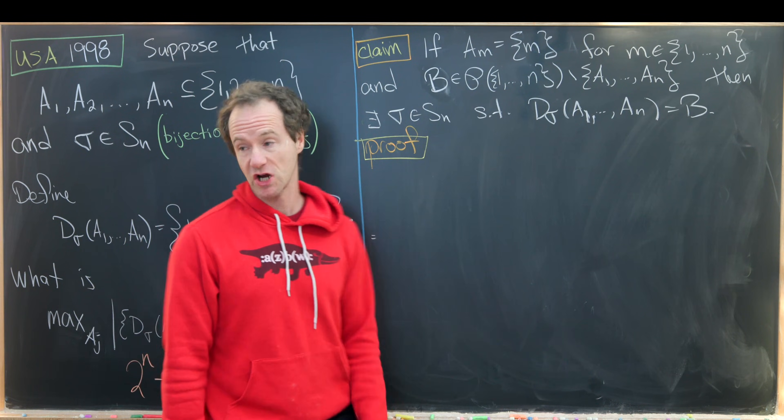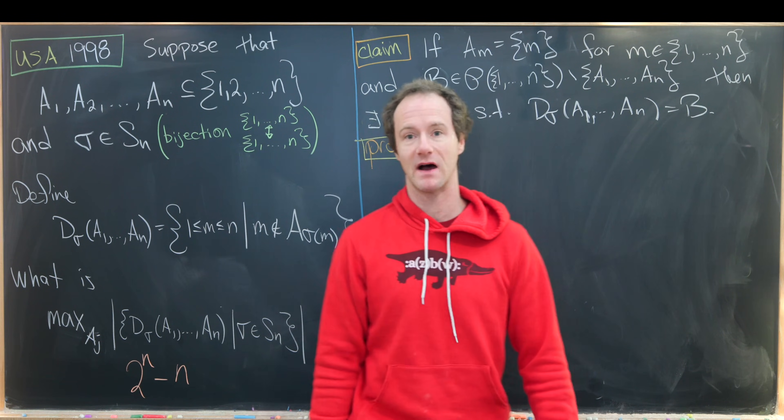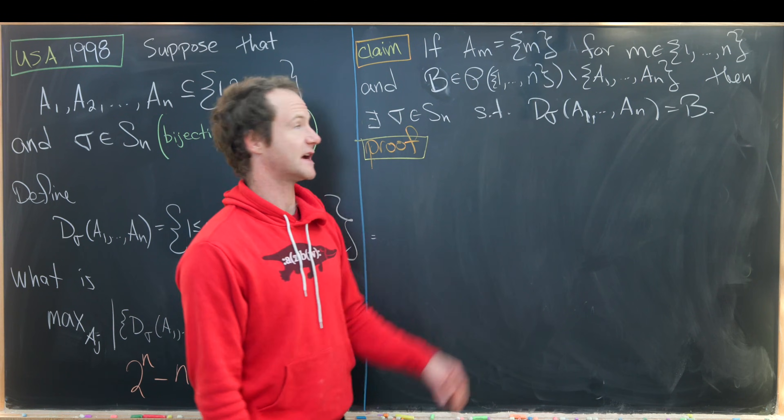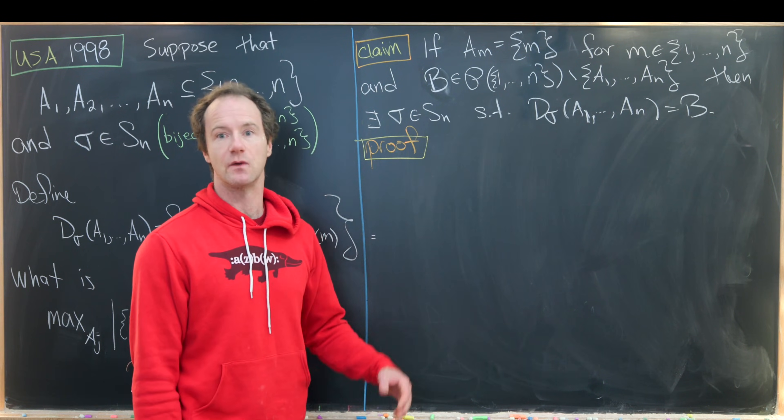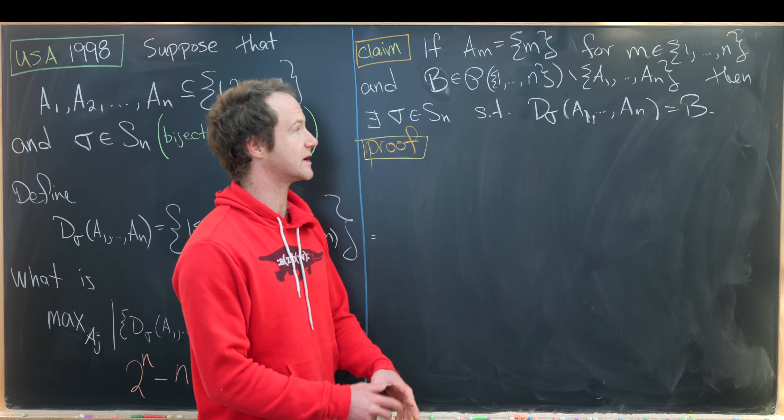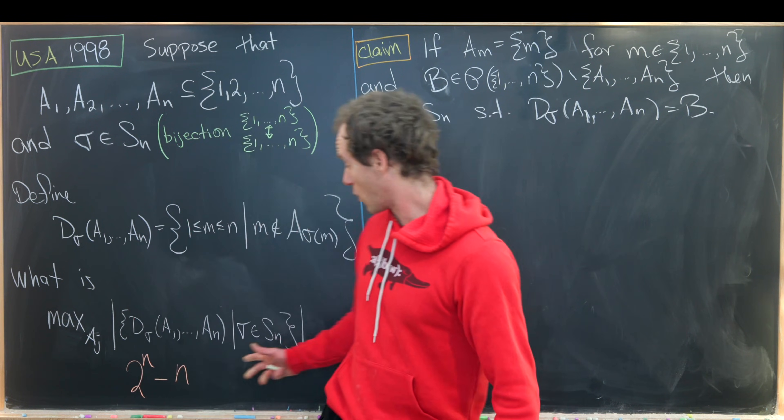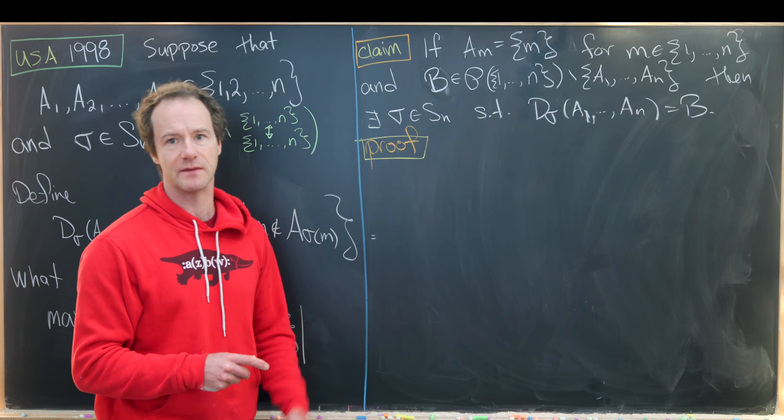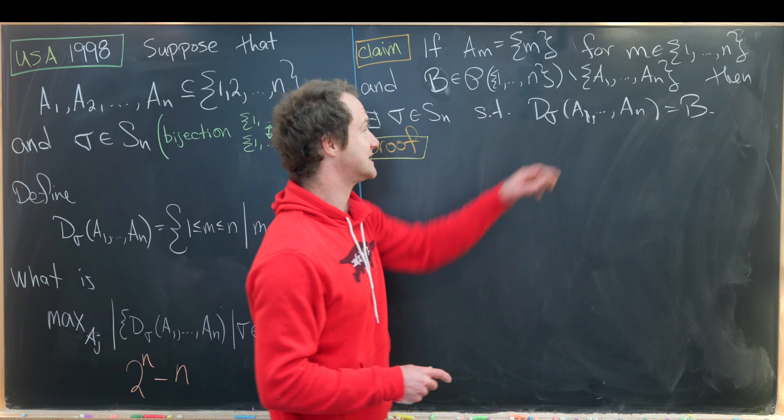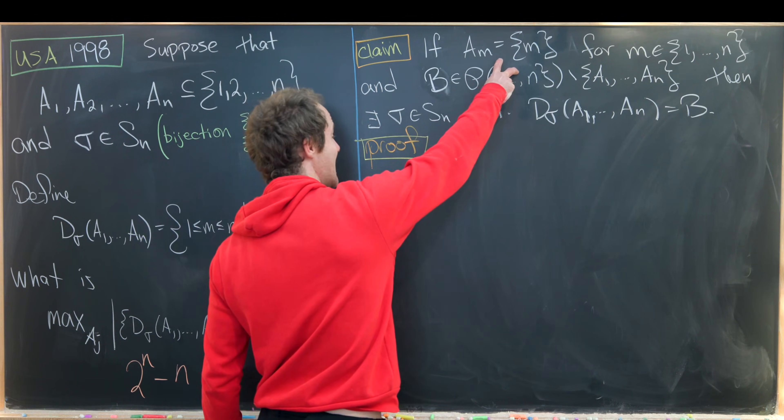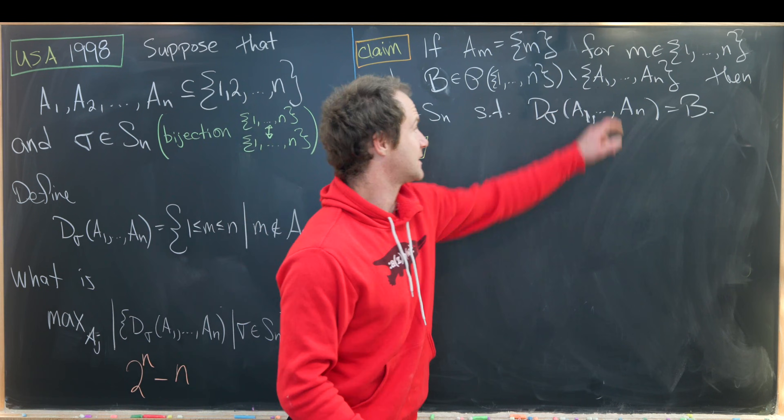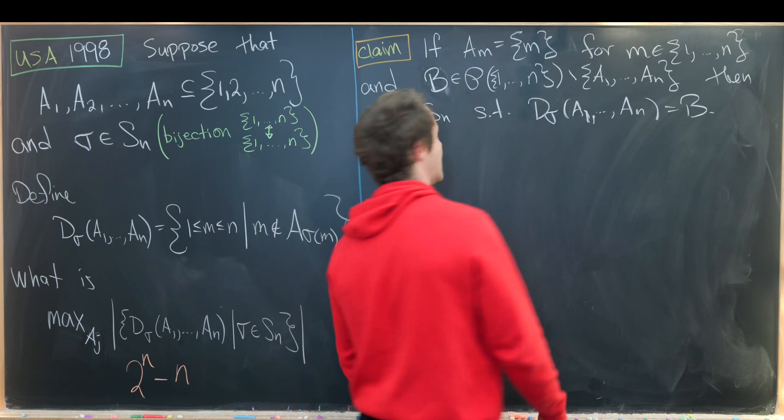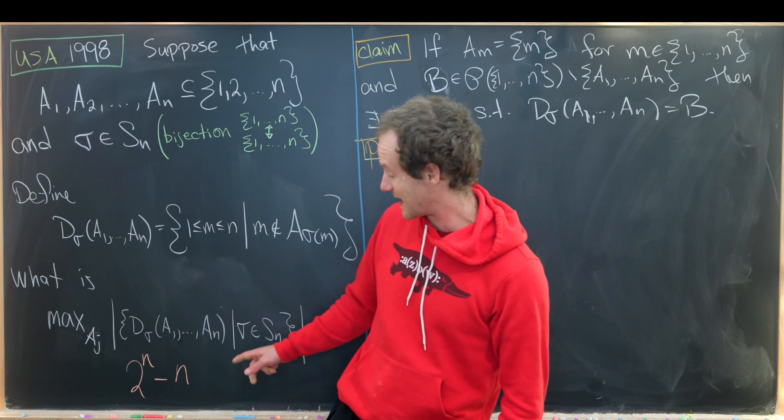Now we're ready to finish this off with the construction that we can achieve this maximum here of 2 to the n minus n. And we can do it with the following example. So let's consider n subsets of the set 1 to n which are just built out of the singletons. So that means A1 is the singleton containing 1, A2 is the singleton 2, A3 is the singleton 3, and so on and so forth. And in order to get to this number we want to show that we can find a σ in Sn in other words a bijection from 1 to n to 1 to n such that D_σ equals B where B is any subset of 1 to n except for the n defined above. But how many guys are there right here? There are exactly 2 to the n minus n. So this construction will show that we can achieve this upper bound.